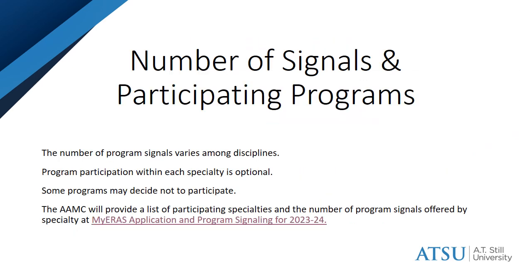Programs in various disciplines use signals differently, and each discipline has allowed students a different number of signals. If you apply to programs in more than one discipline, you will be able to add as many signals as each discipline has allotted. Signaling is optional for both students and programs. Not every program in a given discipline is using program signals, and if you apply to a program that is opted out of signaling, you won't be able to signal them via ERAS.